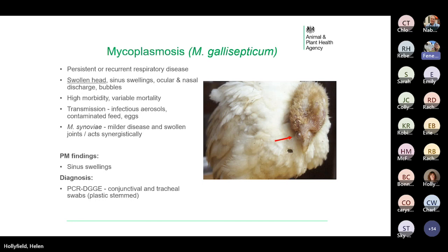Respiratory disease in chickens is often multifactorial and can be triggered by stress. Bacteria can be primary agents but are often secondary to mycoplasma or viral causes. Mycoplasma gallisepticum is one of the commonest agents involved and can cause persistent or recurrent respiratory disease in backyard flocks. Birds with mycoplasma typically have a swollen head, infraorbital sinus swellings, ocular and nasal discharges, and can produce small bubbles from the eyes or nostrils. Flock morbidity is generally quite high with variable mortality. Mycoplasma is transmitted via infectious aerosols, contaminated feed and water, and fomites, and can also be transmitted vertically through the egg.